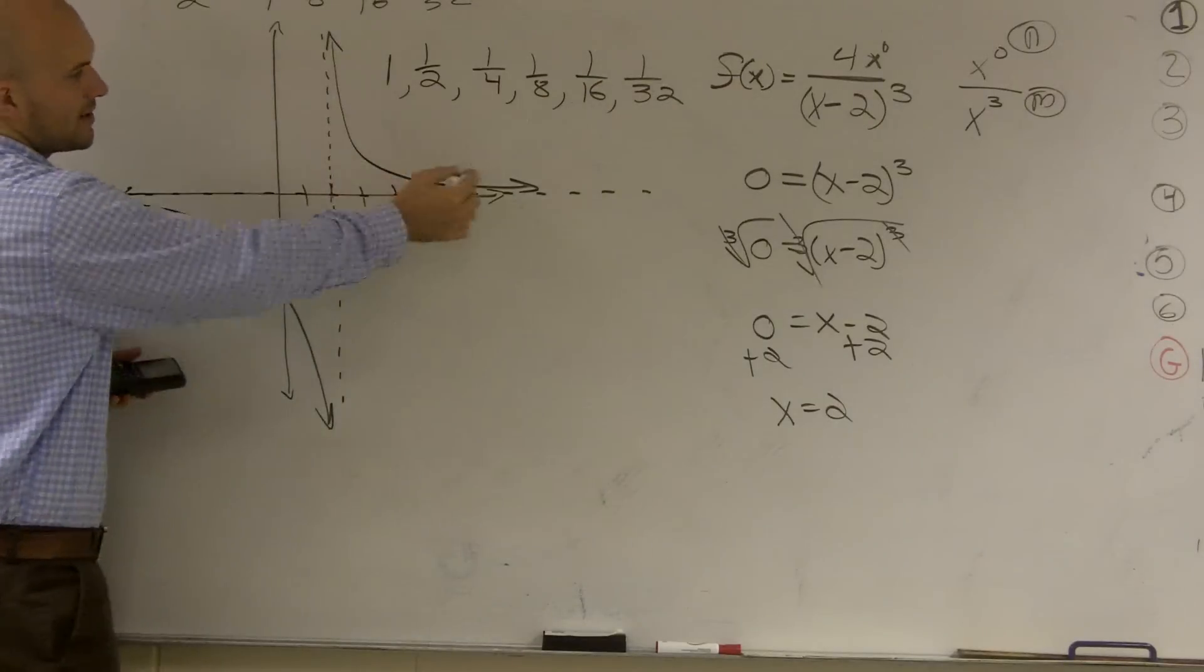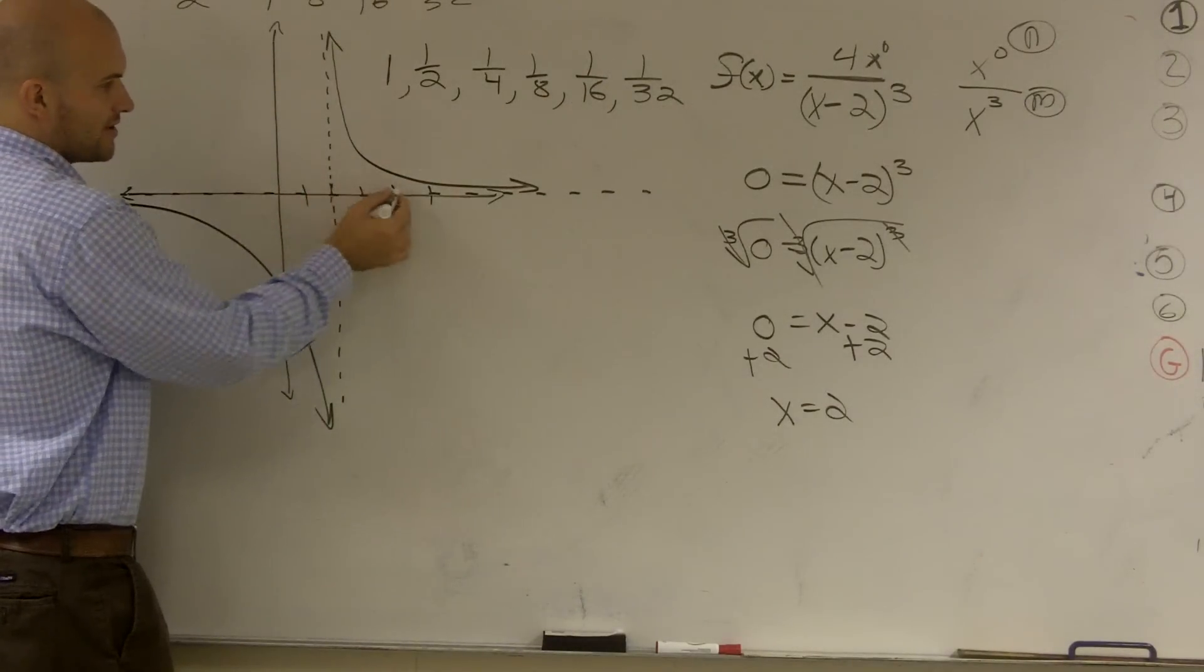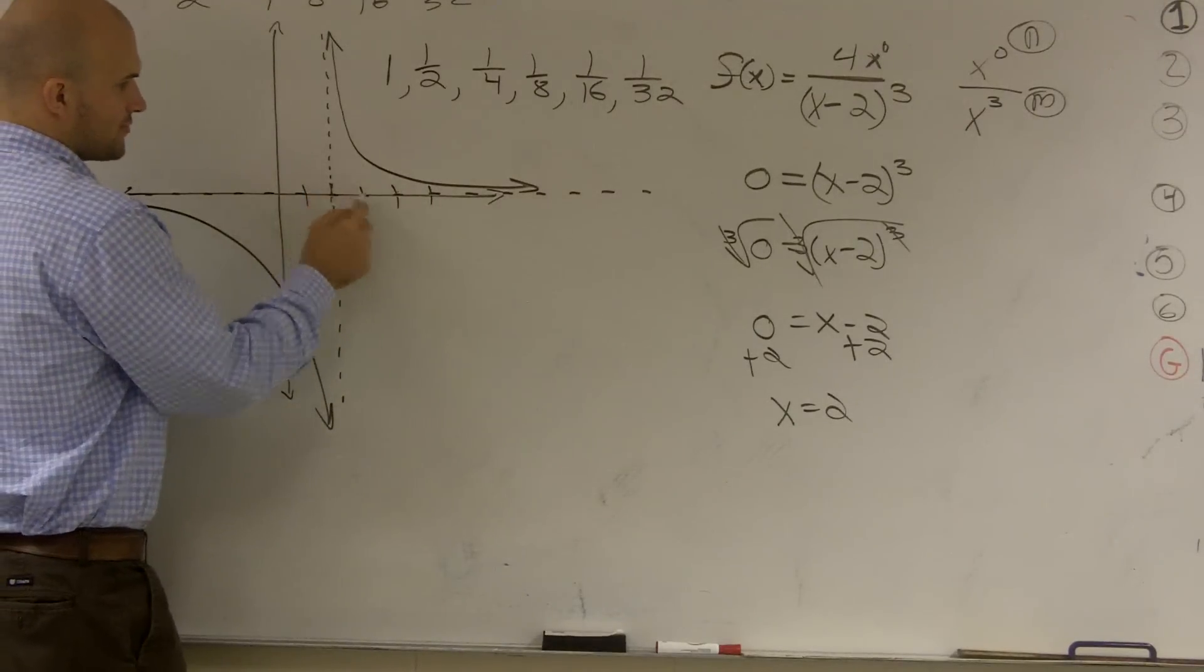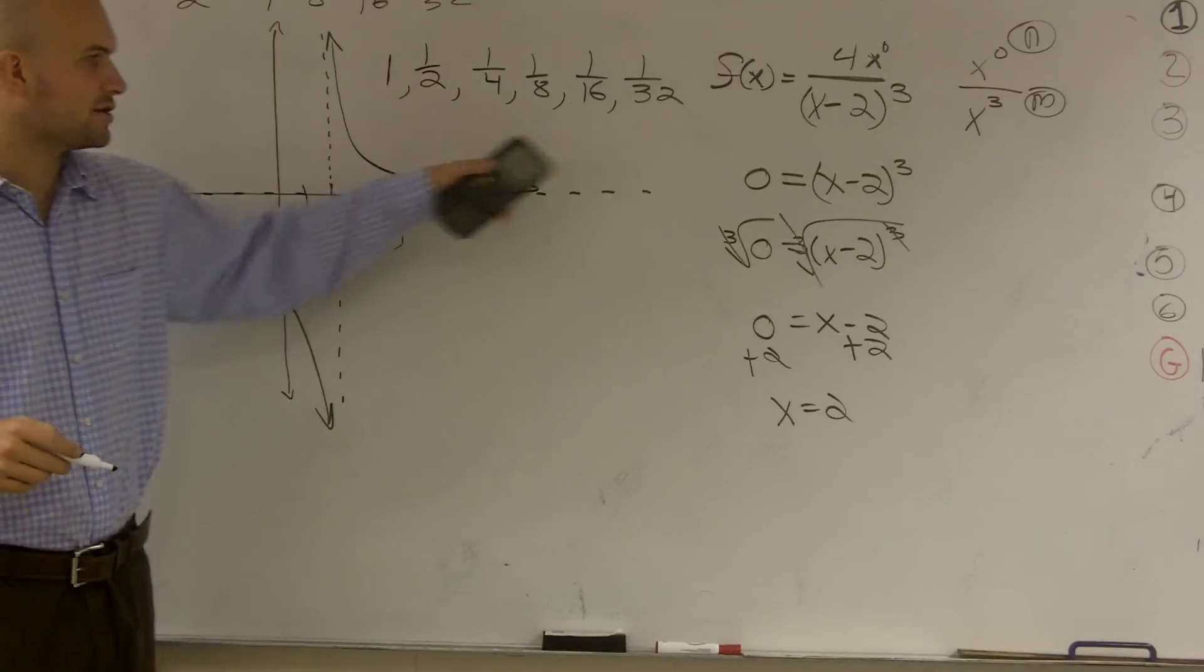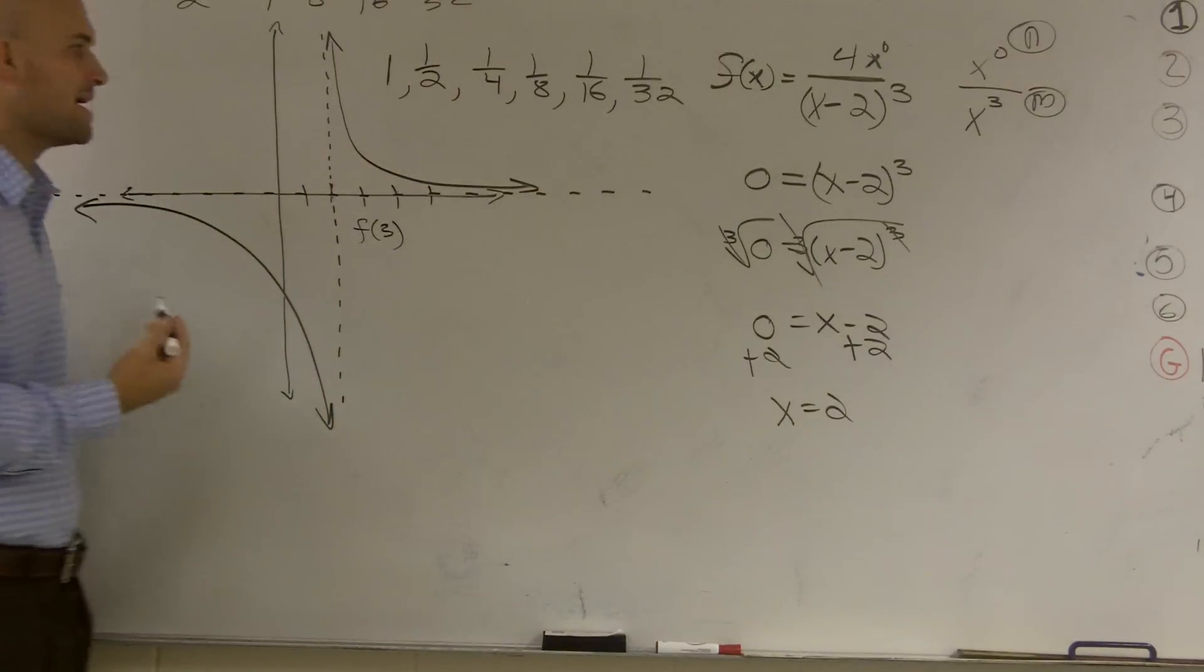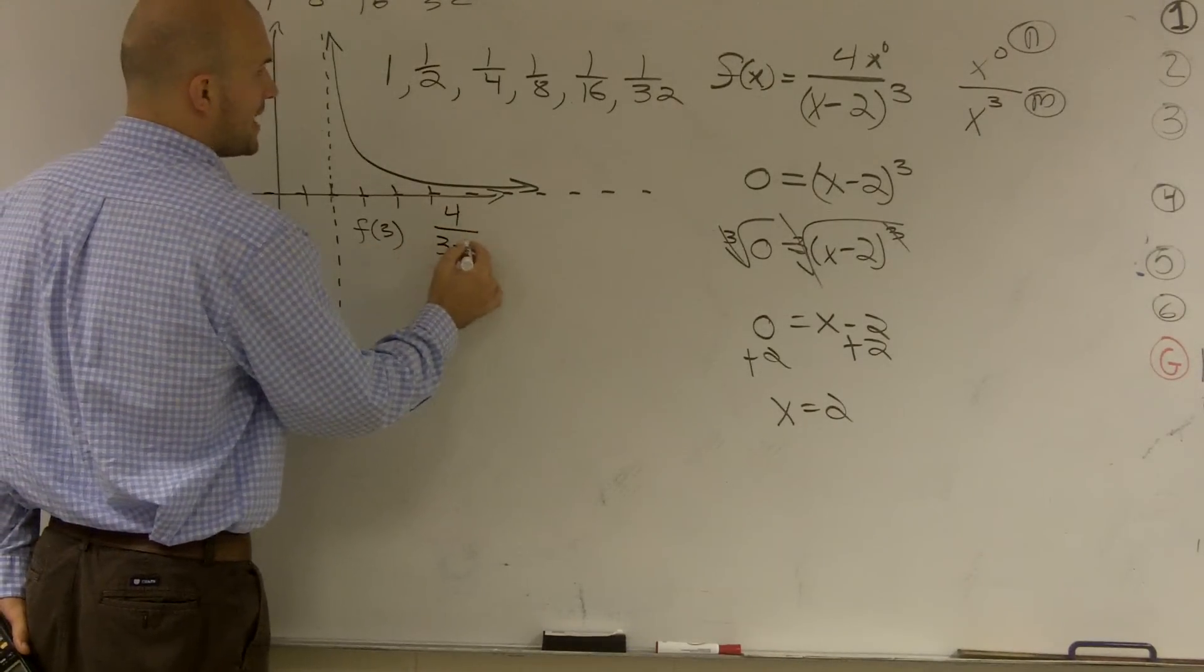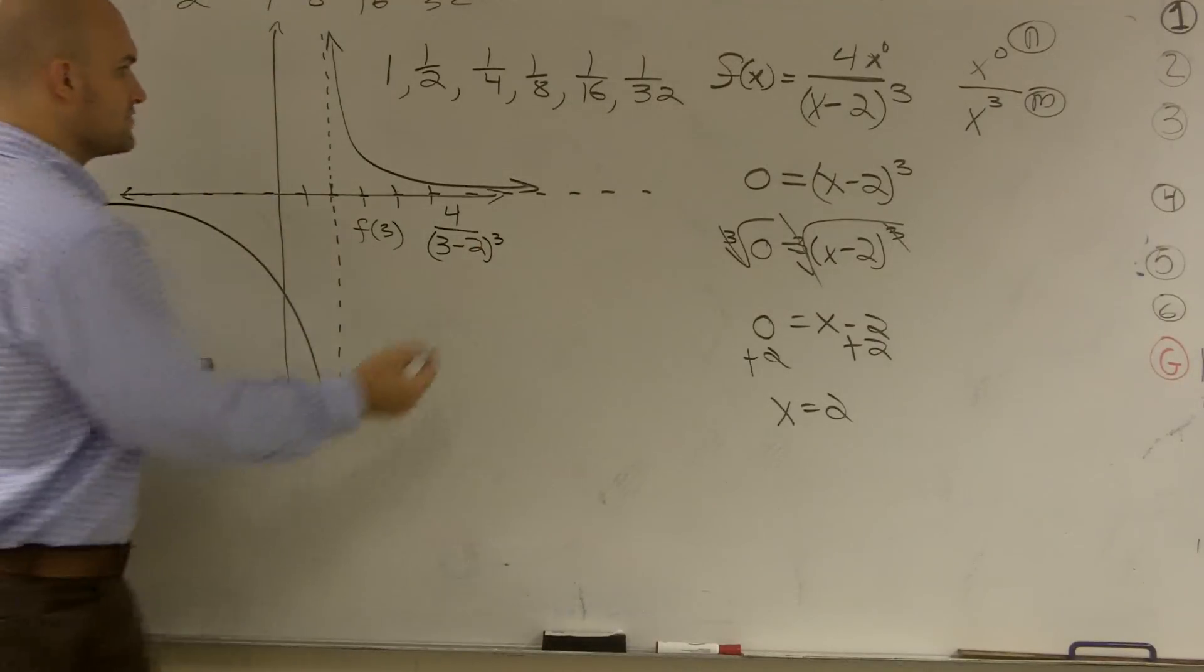So let's look at this function right up here. And let's say, so here's my x values. One, two, three, four, five. Let's look at f of one, two, three. Let's look at f of three. So my function, I'm going to go in this direction, and let's see what happens, what the end behavior is. f of three is going to be four over three minus two cubed. Well, that equals four.